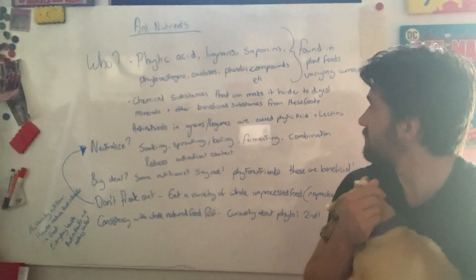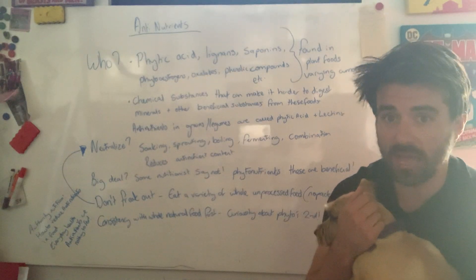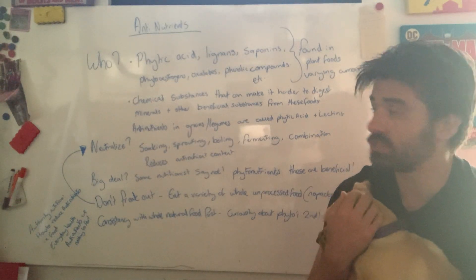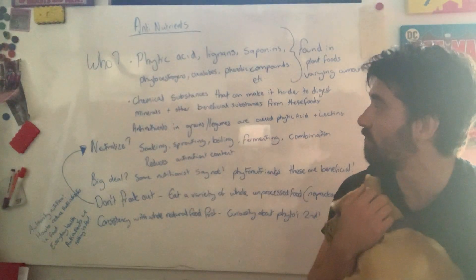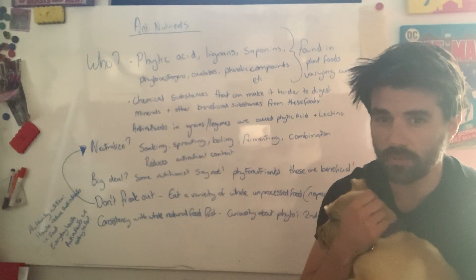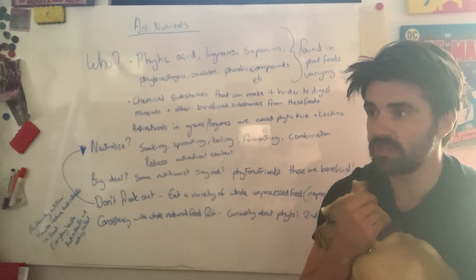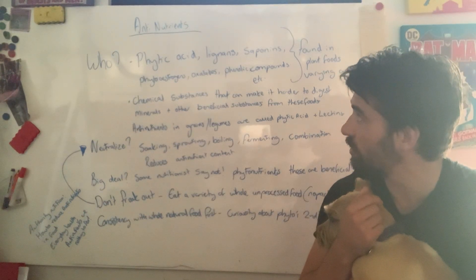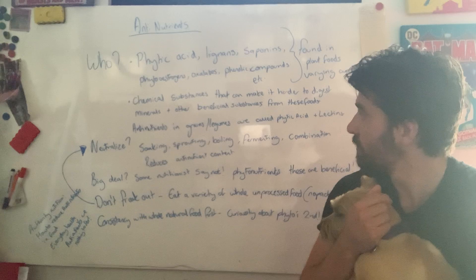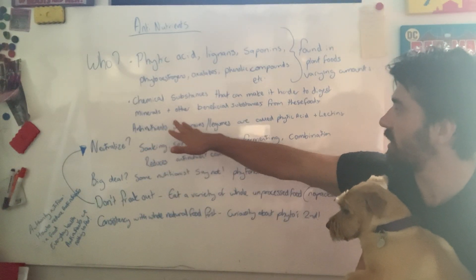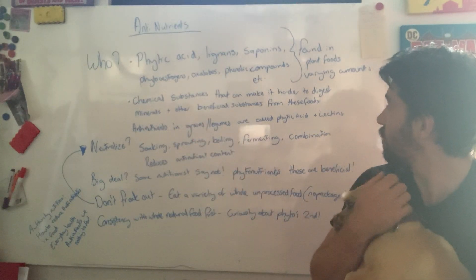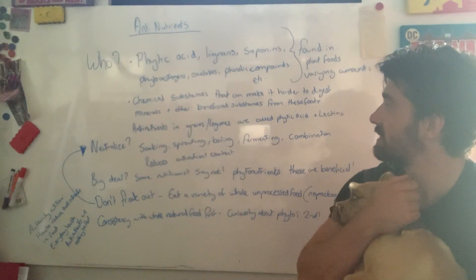So the chemical substances that can, I say can, make it harder for the body to digest minerals and other beneficial substances that we get from foods. Essentially they sound like the bad guys. And if you have surfed the internet a little bit, I'm sure you've come across anti-nutrients before. Names for anti-nutrients also live in our starchy carbohydrates, our grains and legumes, and they're called phytic acid and lectins.